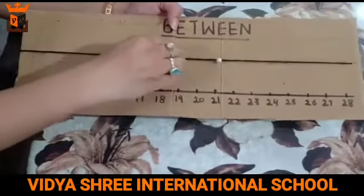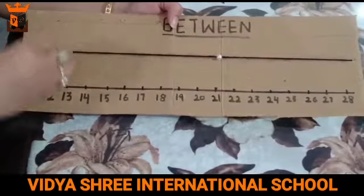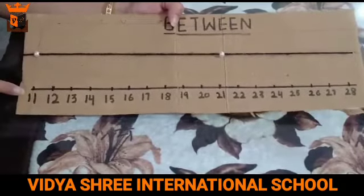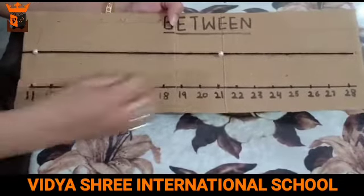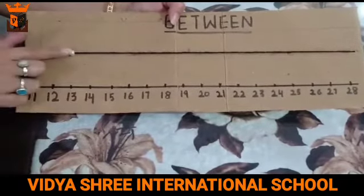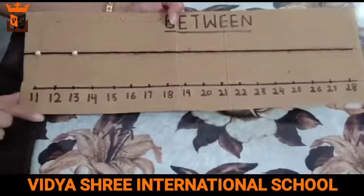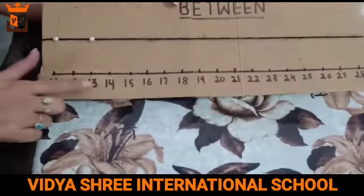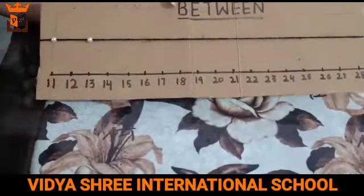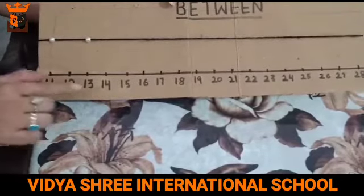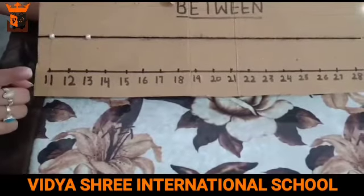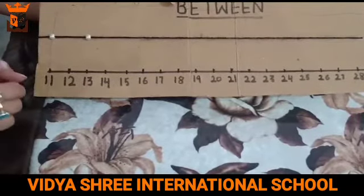What I am going to do is place these beads on two numbers and you have to find out which all numbers are coming in between. I will place the first bead on number 11 and the second on number 13. So which number is coming in between 11 and 13? That is number 12.